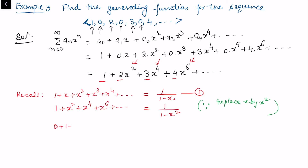So once we take the derivative, we get 1 + 2x + 3x² + 4x³ + ... and the right-hand side becomes 1/(1 - x)².